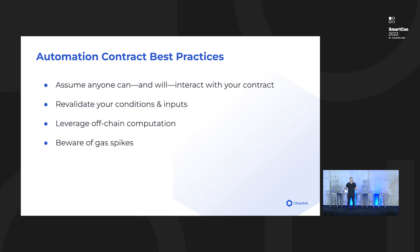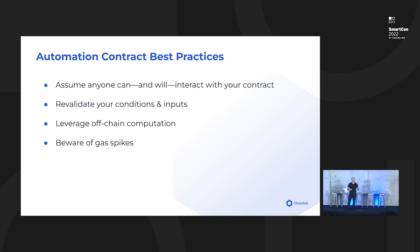The third thing is you should leverage off-chain computation — this is a feature specific to Chainlink automation. During the check, since these checks are happening off-chain and are technically simulated, you can offset a lot of your computation to this check: do lots of work off-chain during that simulation, pass the result to the transaction, and save a lot of gas. Last, beware of gas spikes. If NFT mints are happening all the time, you want to make sure that when you're performing your transaction, gas prices aren't spiking and wasting your funds — especially if you need the action to be profitable. You can add those checks into your contract directly.